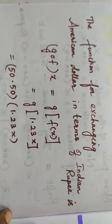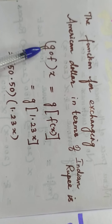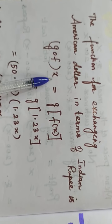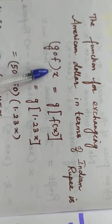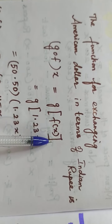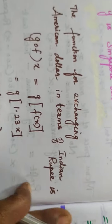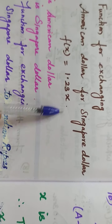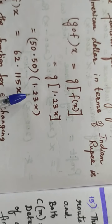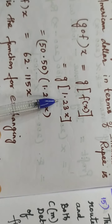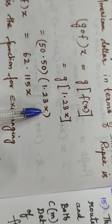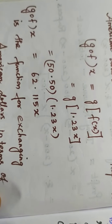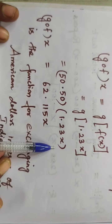Now, to convert American dollar in terms of Indian rupee, in g(y) you substitute g(f(x)). So g composite f of x is equal to g(f(x)). Since f(x) = 1.23x, you substitute 1.23x. So g(1.23x) — since g(y) = 50.50y, replacing y with 1.23x gives 50.50 × 1.23x.